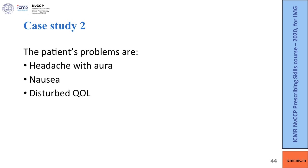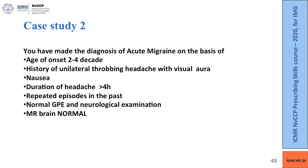The patient's problems are headache with aura, nausea, and disturbed quality of life. The diagnosis of acute migraine is based on: age of onset in second to fourth decade, unilateral throbbing headache with visual aura, history of nausea, duration of headache more than four hours, repeated episodes in the past, nothing remarkable on general or systemic examination, and normal neuroimaging.